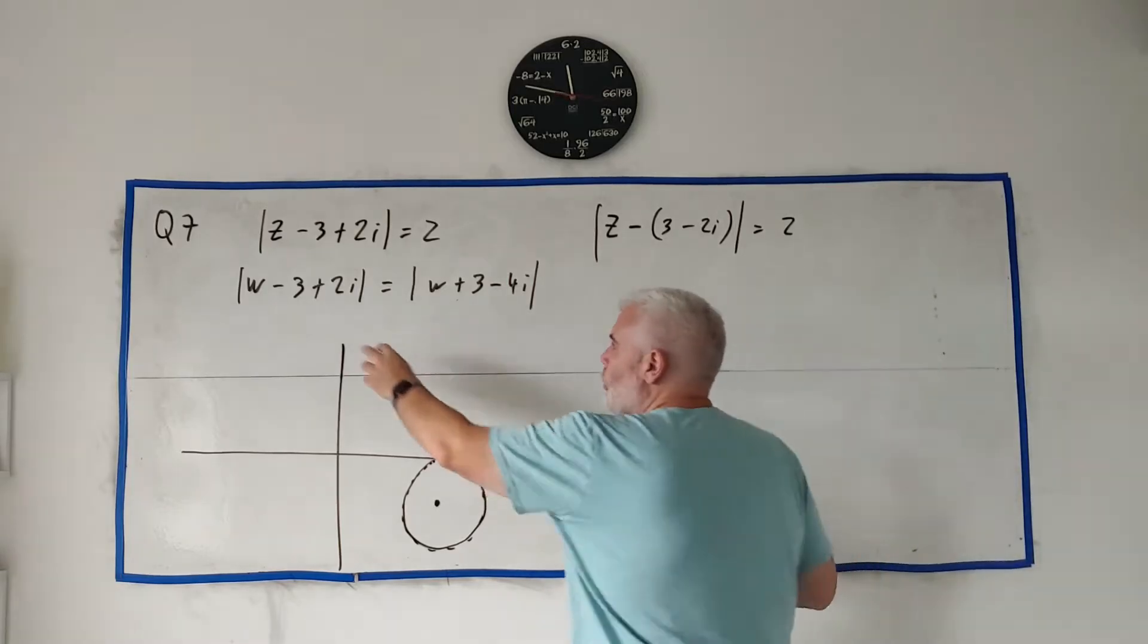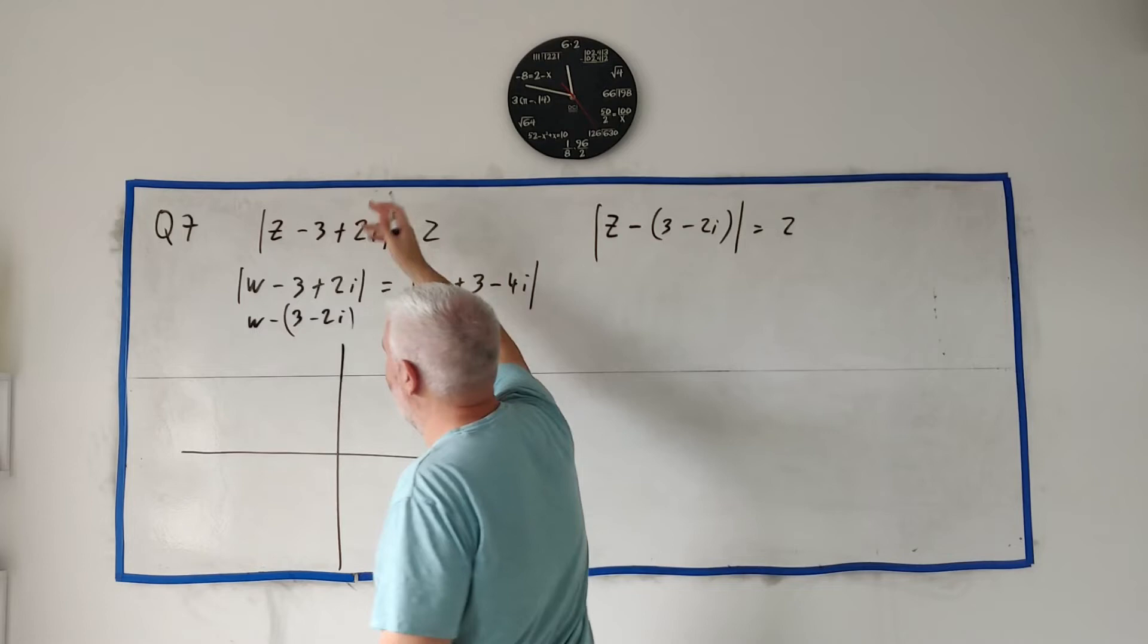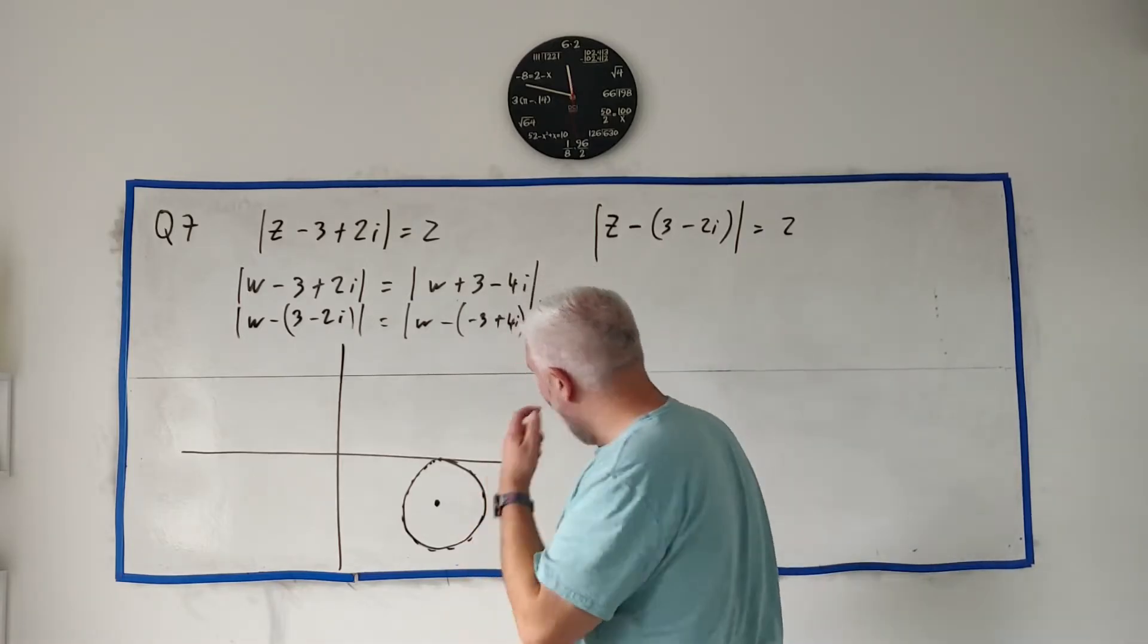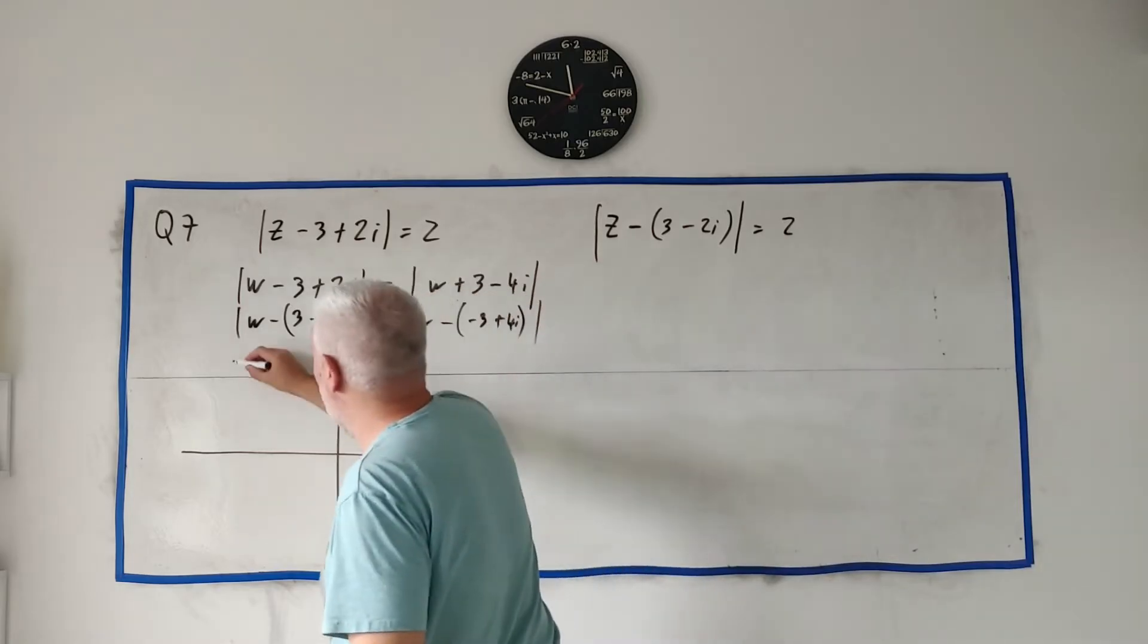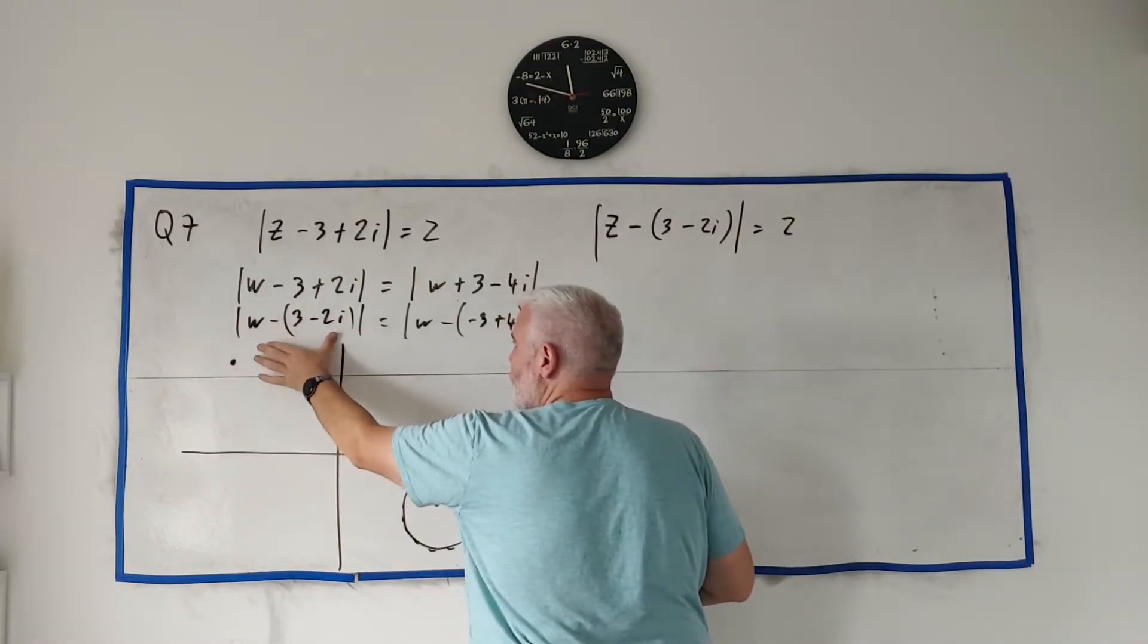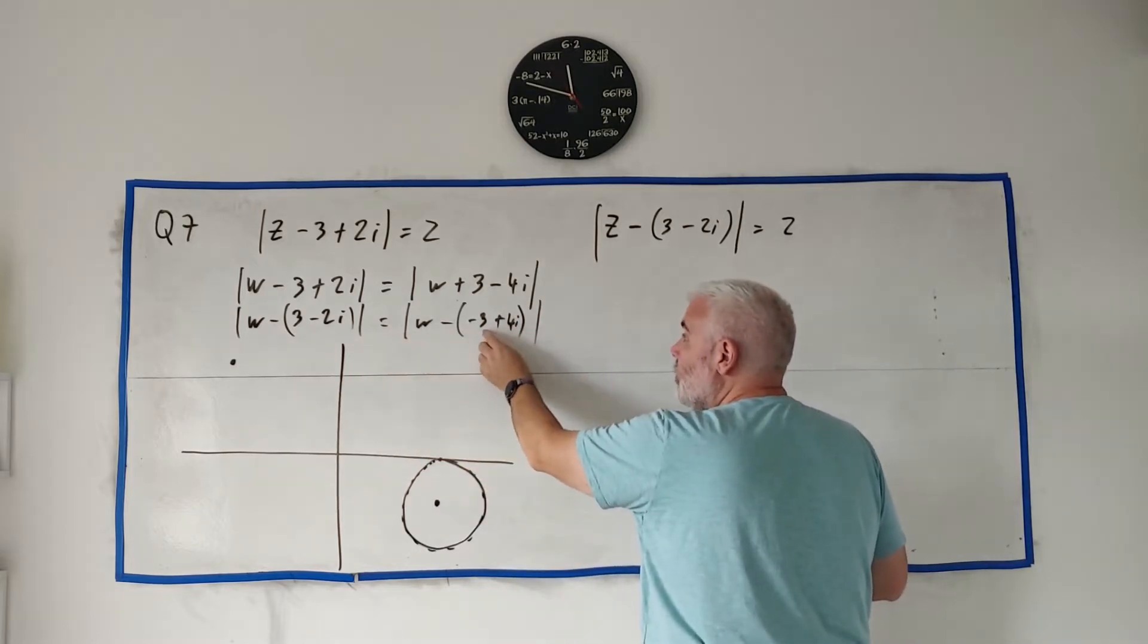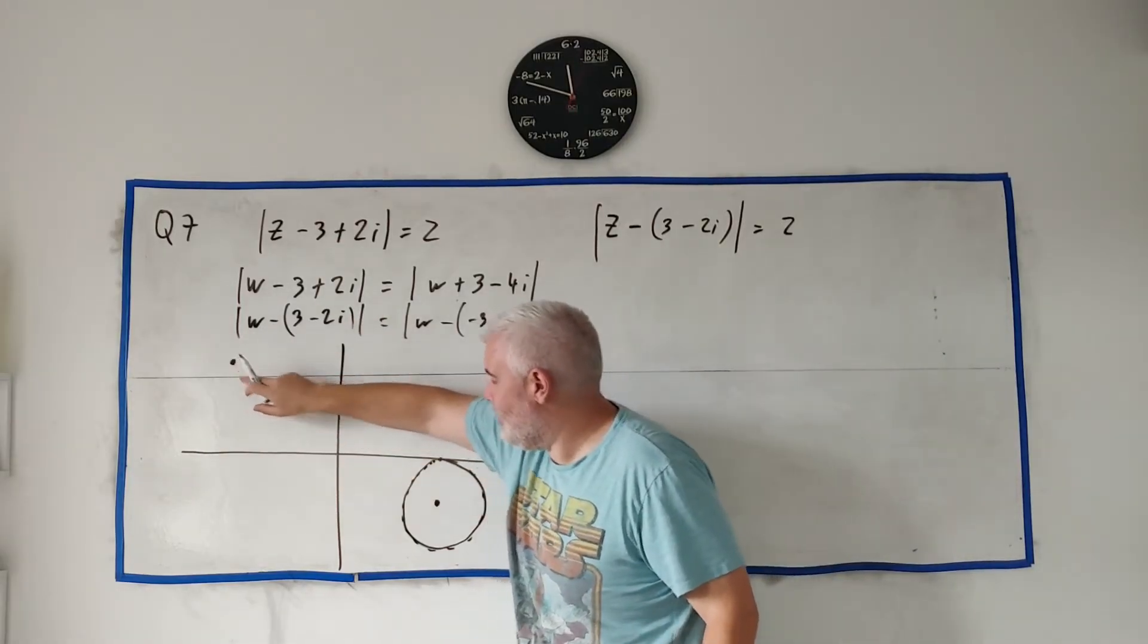That's how we read that. This one is somewhat similar. Let me change it again. W minus 3 minus 2i. It's the same one as up here. Equals W minus, what goes in this bracket, that'd be minus 3 plus 4i. So let's put this point in, first of all. Minus 3 plus 4i would be somewhere up around here. Okay, that's this point. Now, what's this saying? This is saying the distance away from w is equal to the distance away from, sorry, the distance away from 3 minus 2i is equal to the distance away from minus 3 plus 4i.